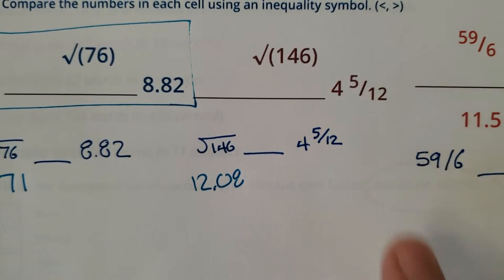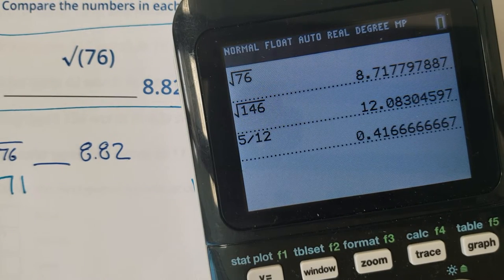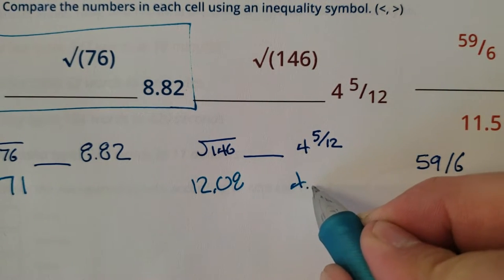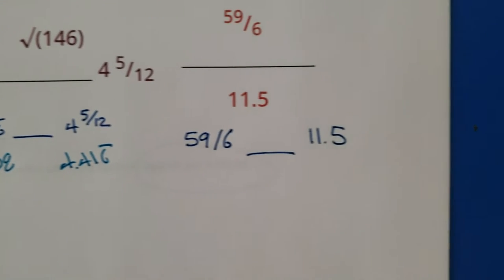How do you do that? Just go 5 divided by 12. Might as well. 5 divided by 12 is 0.416 repeating. So this would be 4.416 repeating. Moving on.